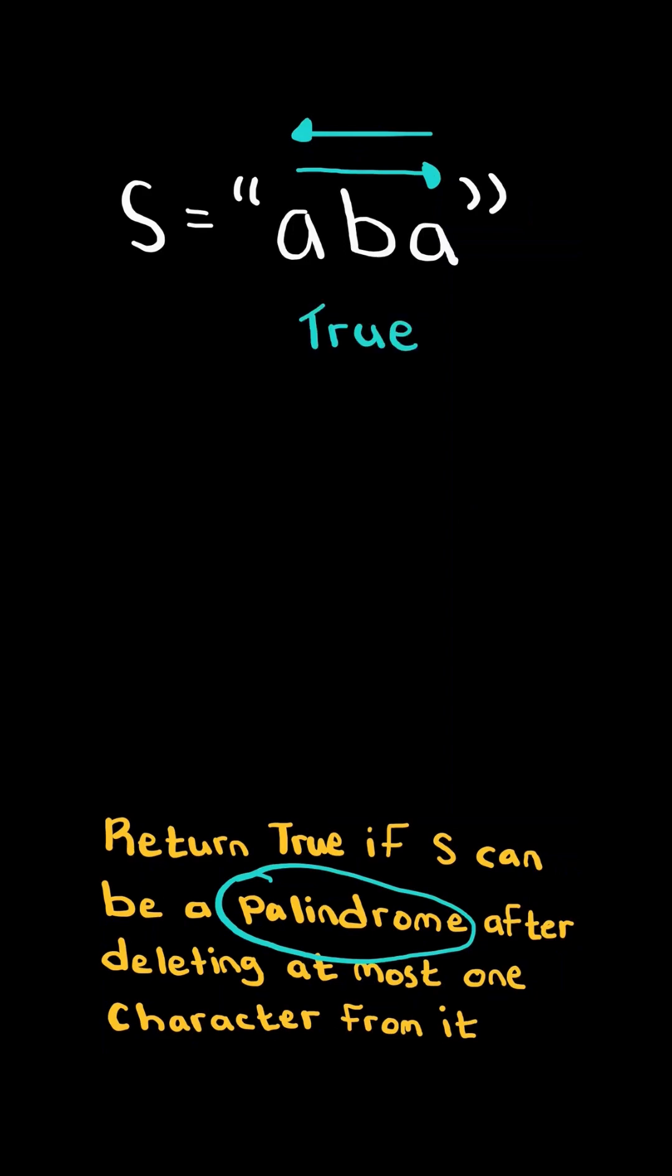In this case, the string is already a palindrome, so we return true. Consider this new example. If we delete b, for example, then the string is the same forward and backwards, so we return true.